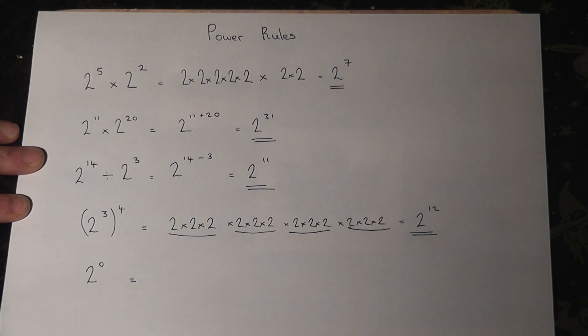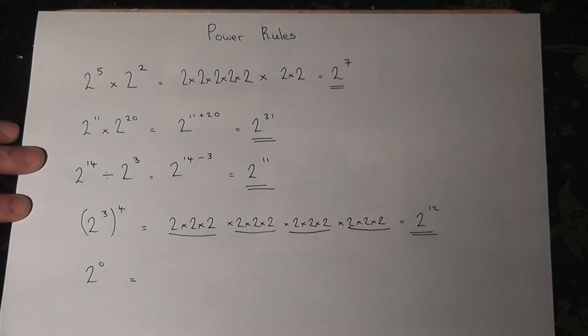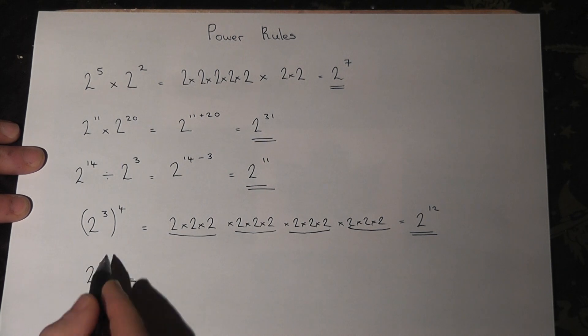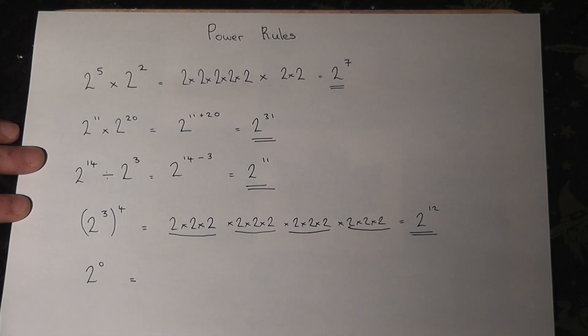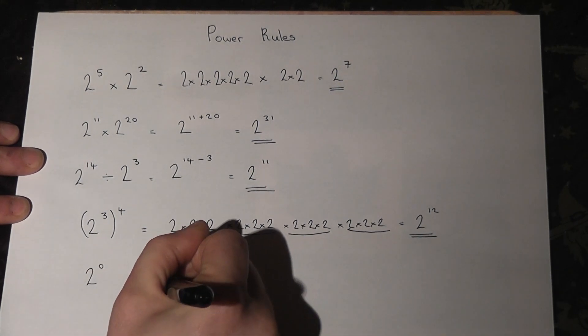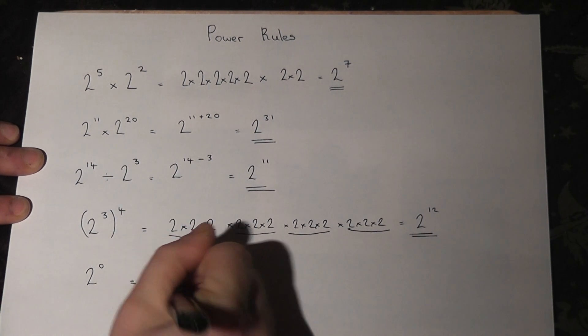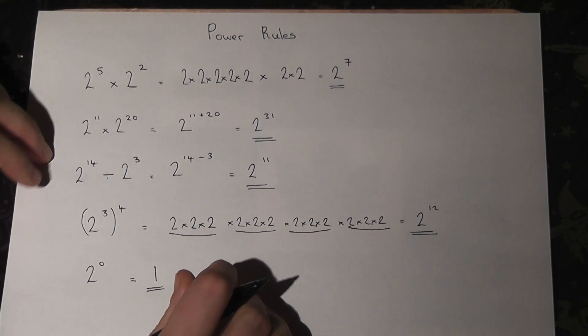The final rule, which we won't prove in this video, is something to the power of 0. It's worth knowing that anything to the power of 0 is always equal to 1. A future video will prove that fact.